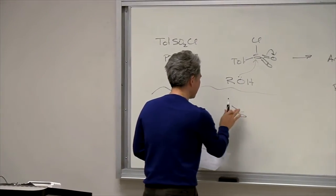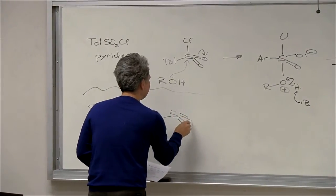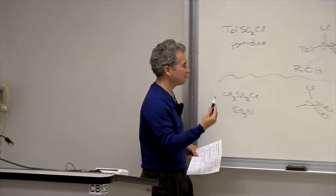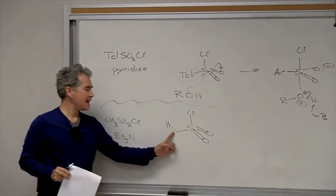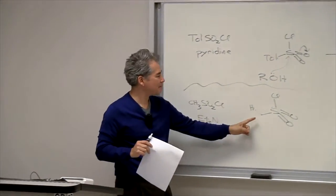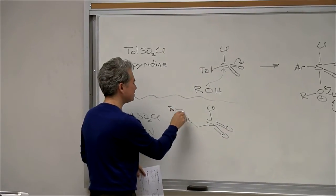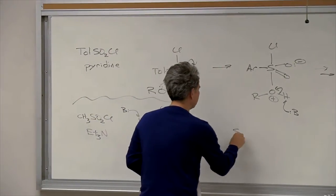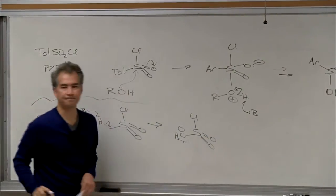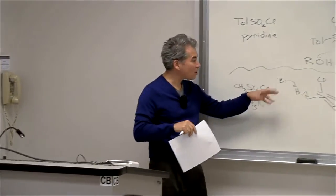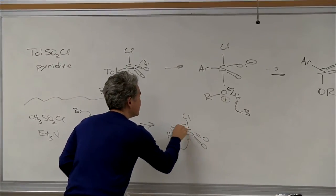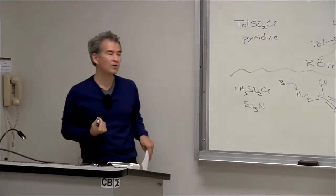As soon as you see triethylamine, I would be thinking they're probably adding that to make a small concentration of alkoxide anions. But what you couldn't have guessed is that the CH on the methyl group — because there's no CH next to sulfur on a tosyl chloride, but a methyl group does have one — this deprotonates at sufficient rates that you get a small amount of this anion. And then that chloride leaves very quickly to generate an intermediate called the sulfene intermediate.